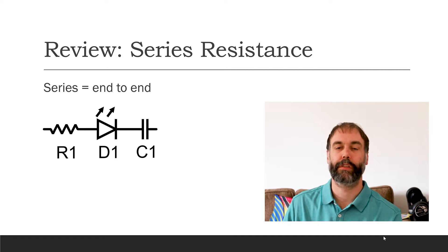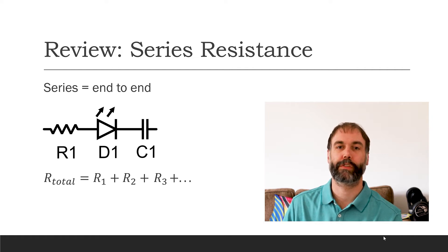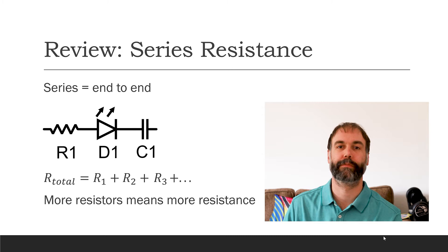These components are all connected in series. The total resistance in a series circuit is just the sum of all of the individual resistors. If all of these components were resistors, then the total resistance would be R1 plus R2 plus R3, and so on, for as many resistors as you have in the circuit.